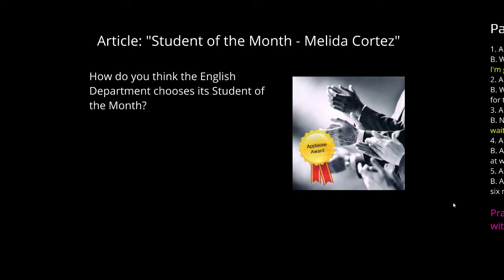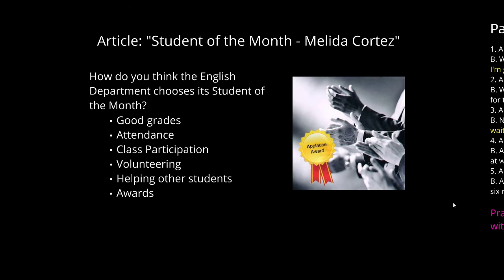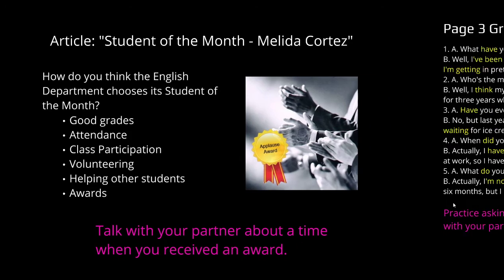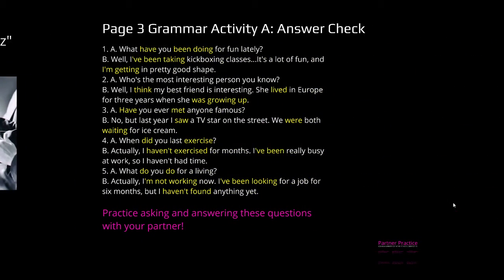How do you think the English Department chooses its Students of the Month? Talk about this with your partner. Talk with your partner about a time when you received an award. Here's the grammar activity from page 3 — you need to complete this and write the answers in your assignment notebook. Please complete the activities before you look at the answers. Then practice asking and answering these questions with your partner during your KakaoTalk voice chats.